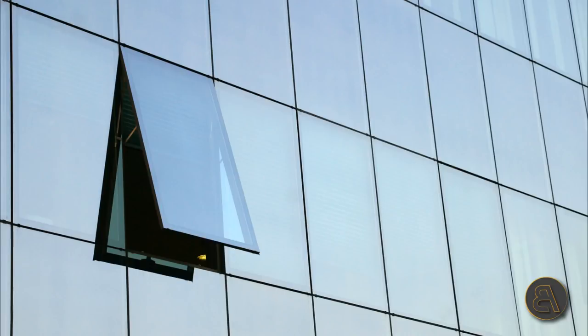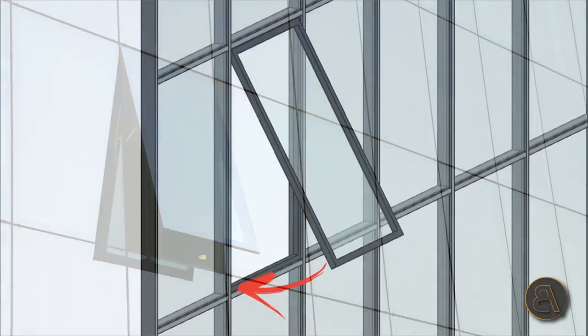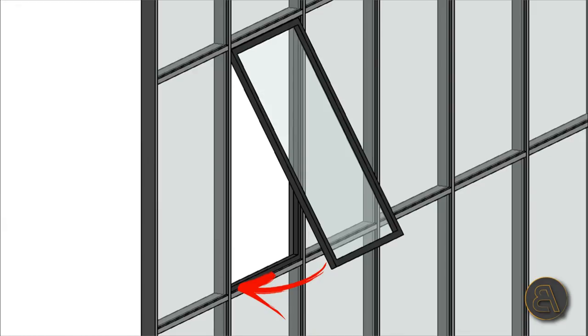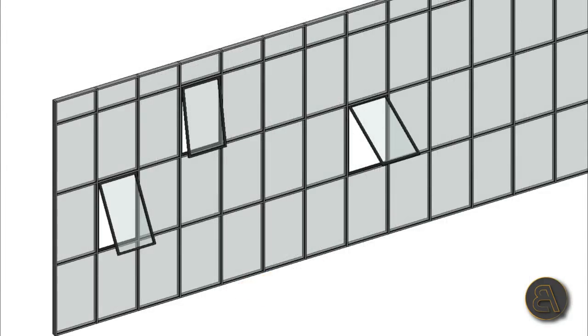What's going on guys, BalkanArctit here. In today's tutorial I'm going to be showing you how to create a curtain wall panel that's a parametric window that opens. It's going to be a family with a parameter so for each window you'll be able to set a different angle of openness. These curtain wall panels usually open from the top, with hinges on the top.